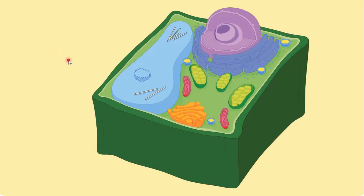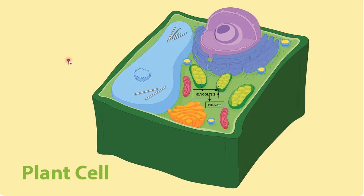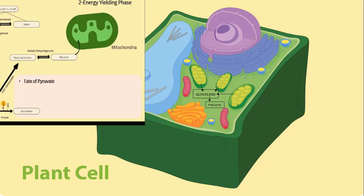Hello everyone. In this video we are going to learn what is the Krebs cycle. In our previous video we have seen how glycolysis takes place in the cytosol and in plastids, and what is the end product of glycolysis, that is pyruvate. The fate of this end product depends upon the presence or absence of oxygen. If oxygen is present, it moves toward the matrix of mitochondria.